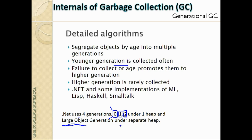If your objects exceed 85KB, they go directly to the large object generation — not frequently visited. Objects below 85KB go into the normal first heap (gen 0, 1, 2 progression). Objects that survive iterations are likely to stay long in memory and consume memory for longer periods. This is why object size matters when thinking about GC behavior in .NET.